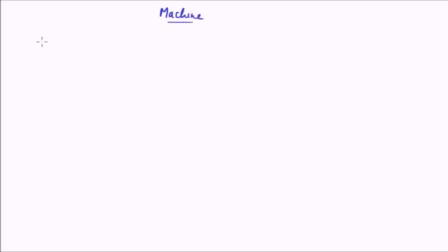Now, what are the functions of a machine? First, a machine can be used as a force multiplier. What that means is that a machine can be used to overcome a large force by applying a small force. So by applying less force and using the machine as a force multiplier, we are able to overcome a large force.